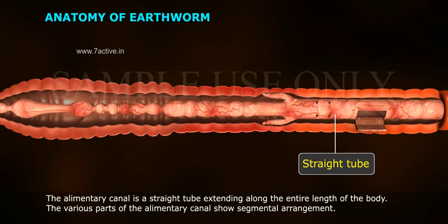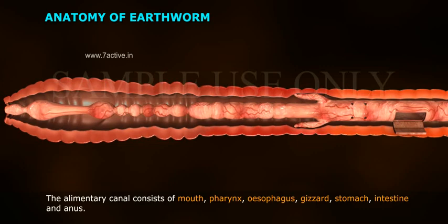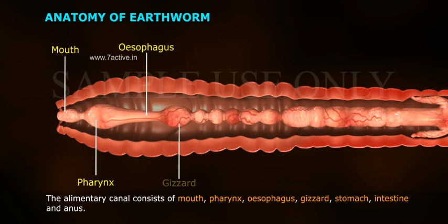The alimentary canal is a straight tube extending along the entire length of the body. The various parts of the alimentary canal show segmental arrangement. The alimentary canal consists of mouth, pharynx, oesophagus, gizzard, stomach, intestine, and anus.